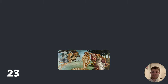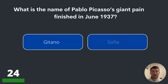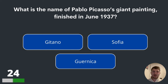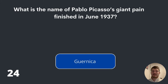Question twenty-four. What is the name of Pablo Picasso's giant painting finished in June 1937? Gitano, Sofia or Guernica? The answer is Guernica.